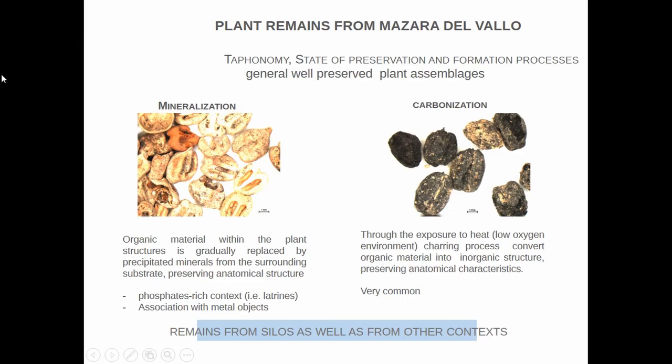From Mazzara del Vallo we have two types of archaeobotanical material with two different taphonomical characteristics: mineralized and charred. This gives us the possibility to find plant material used in the cooking process as charred material, but also material connected to daily life. Mineralization is a good process to preserve material with good characteristics, and it is rare in archaeobotanical assemblages.